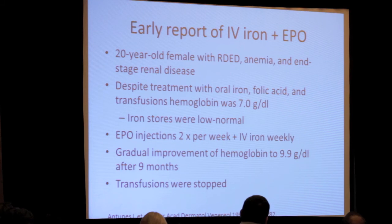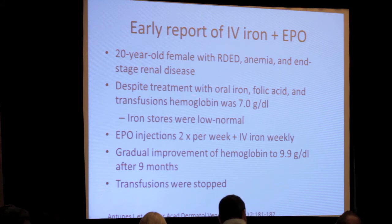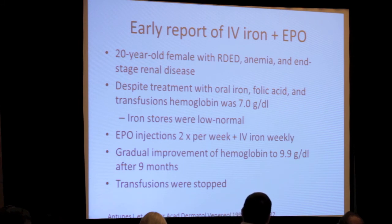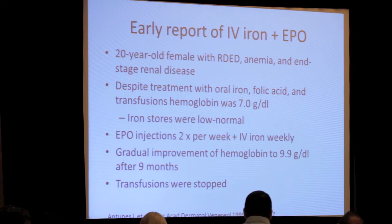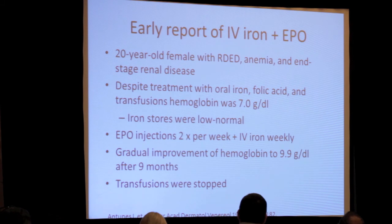There was also a 1999 paper reporting an adult patient with RDEB who also had mild end-stage renal disease, treated with IV iron and erythropoietin. Her improvement was more gradual — she went from a chronically low hemoglobin of about 7 to close to 10 on therapy. More importantly, she actually stopped needing transfusions during this time.